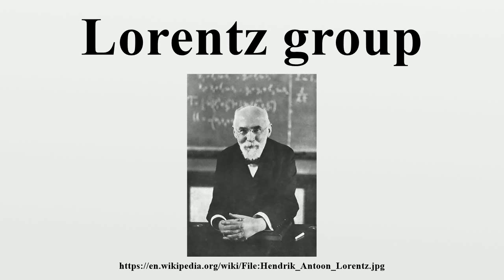SL acts on the space of Hermitian matrices via A·X = AXA†, where A† is the Hermitian transpose, and this action preserves the determinant. Therefore, SL acts on Minkowski spacetime by isometries, and so is homomorphic to a subgroup of the Lorentz group. This completes the proof that there is a homomorphism from SL to SO+. The kernel of the spinor map is the two-element subgroup {±I}, and the map is surjective. By the first isomorphism theorem, the quotient group PSL is isomorphic to SO+. In optics, this construction is known as the Poincaré sphere.